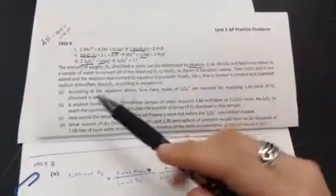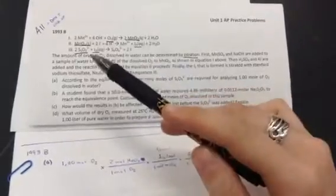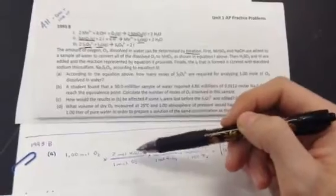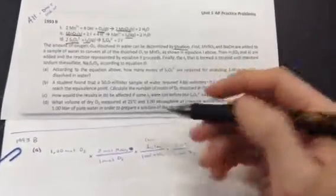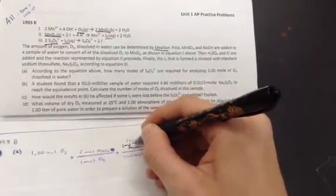So I know in order to get to thiosulfate, I need to go from oxygen to manganese 4 oxide. I've got a mole ratio of 2 to 1. That's what's here, 2 to 1. Next, I'll rewrite this so it makes a little more sense, 1 mole of I2.